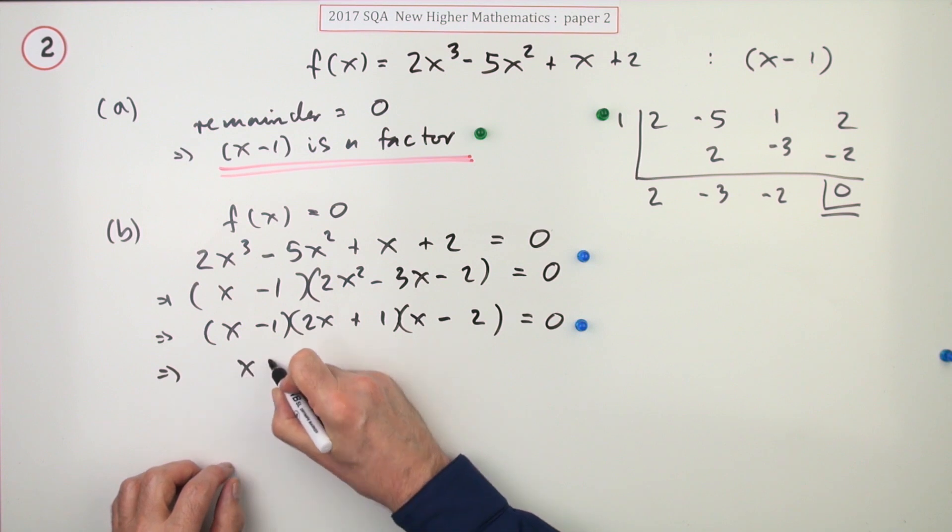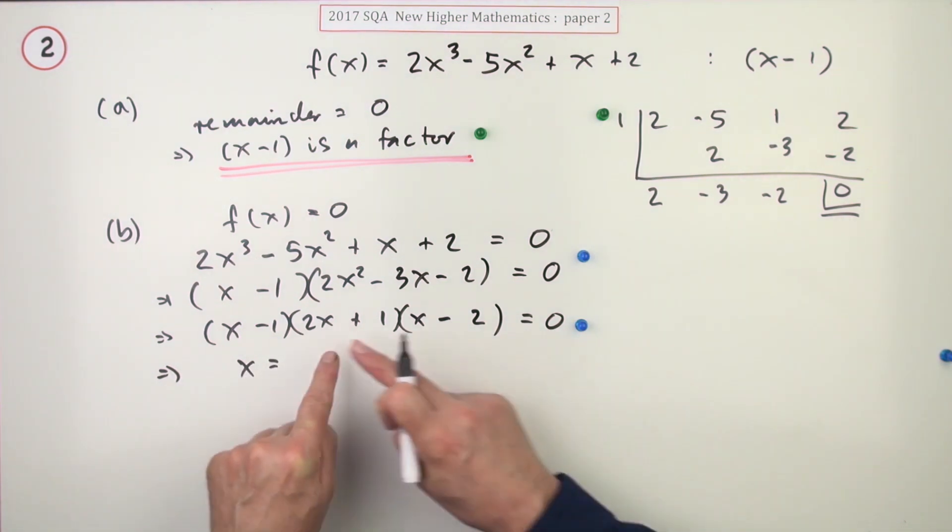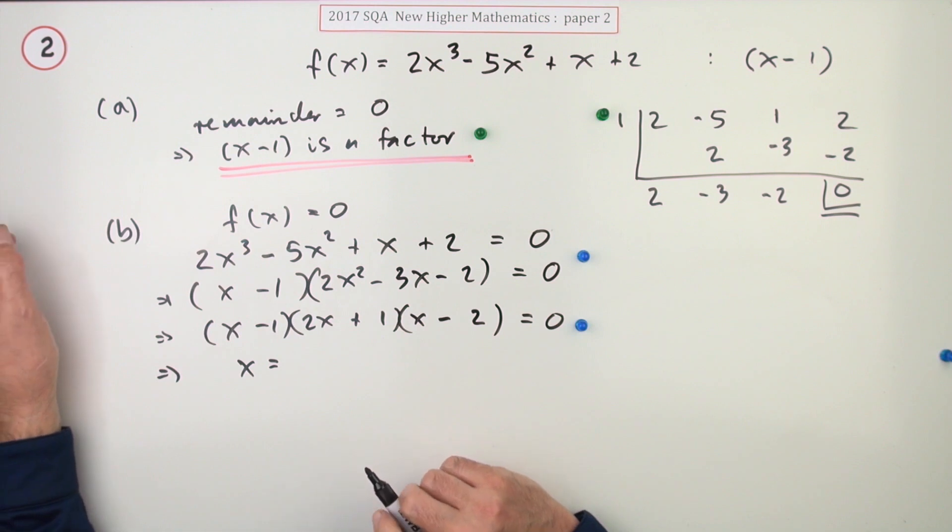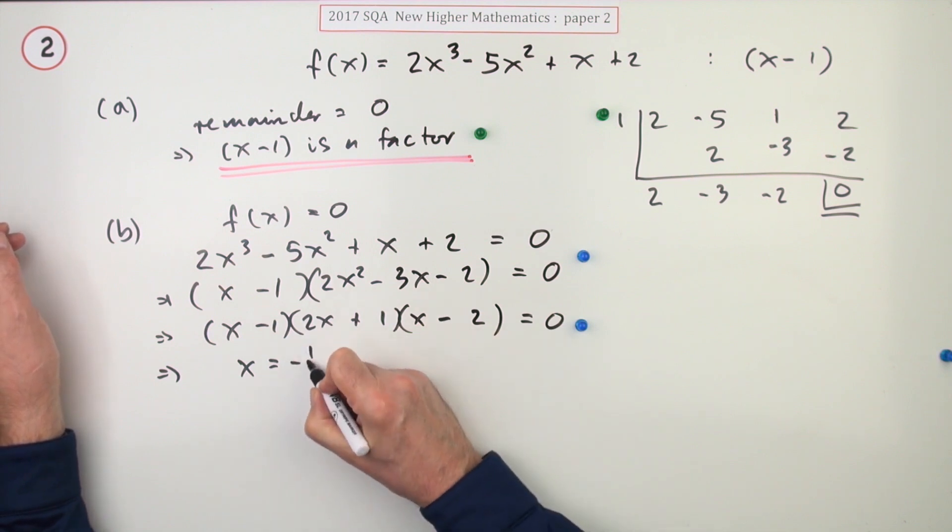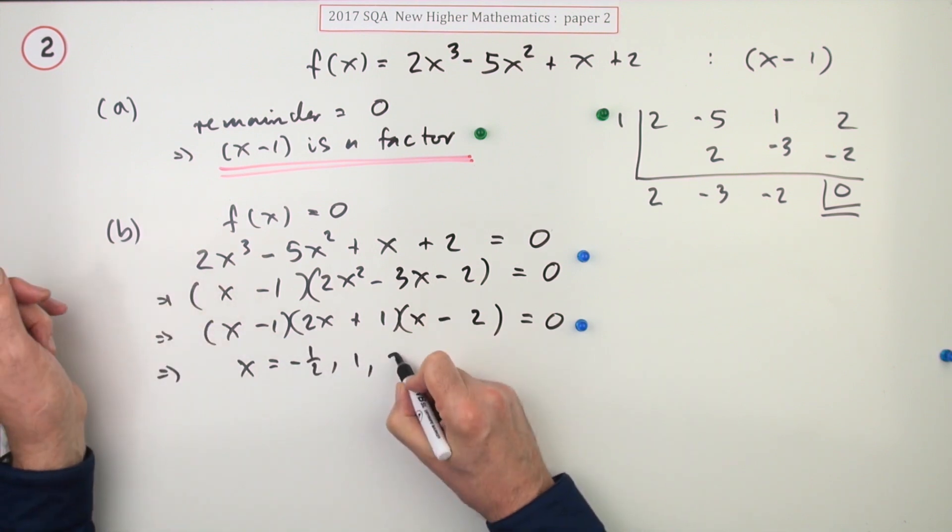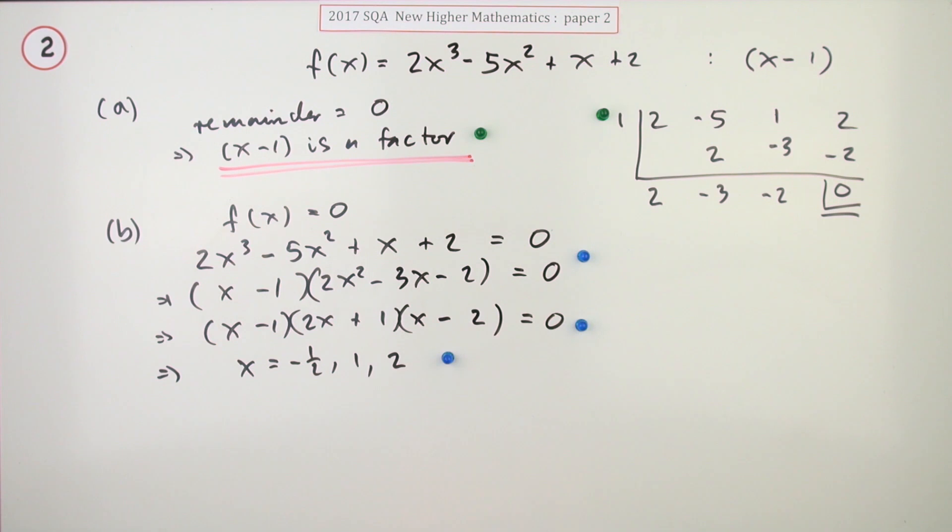And then, so what are the solutions to this? What are the roots of this equation? Leave it alone. Well, in order, you've got negative 1. You can just put them in the same order you've got here, but in order, you've got negative 1, then the 1, then the 2. There's a 3 mark.